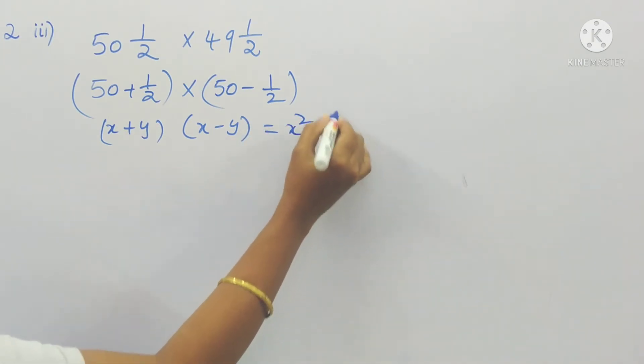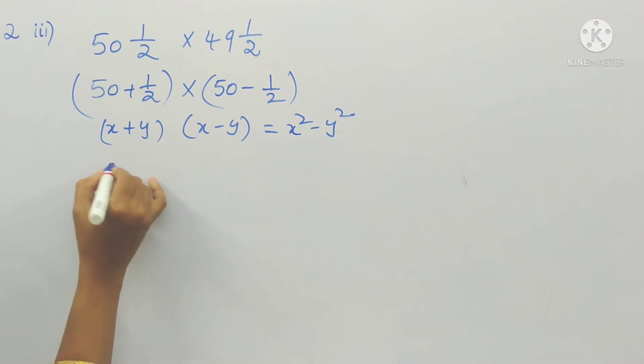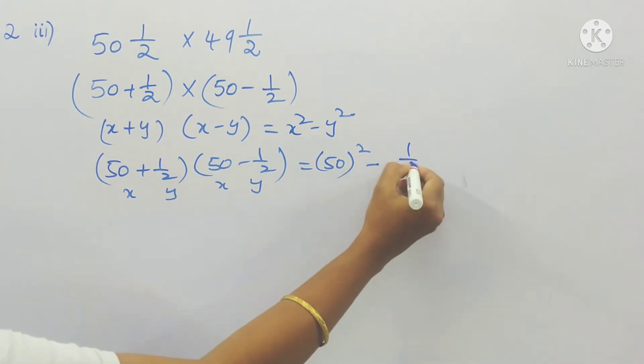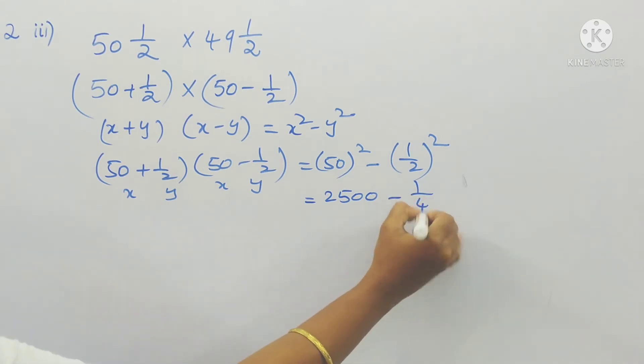What is the formula for this? x squared minus y squared. So here in the place of x, 50 is there and in the place of y, 1 by 2 is there. So x squared means 50 whole square minus y means 1 by 2 whole square. So 50 whole square is 2500 minus 1 by 4. That implies 25 whole square is 100. Already we have two zeros. So minus 1 by 4. That is 10,000. So 9999 by 4.